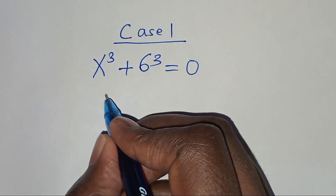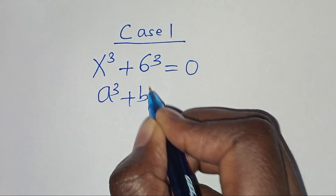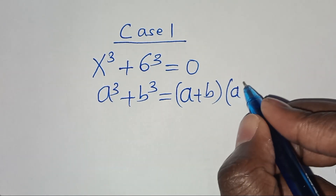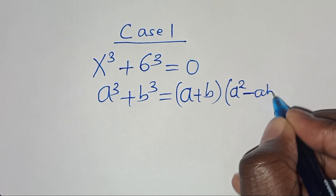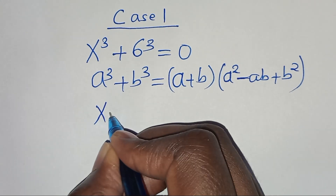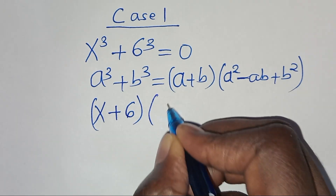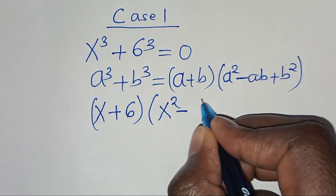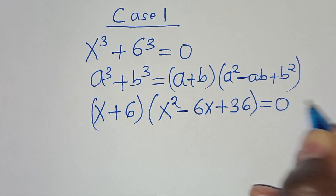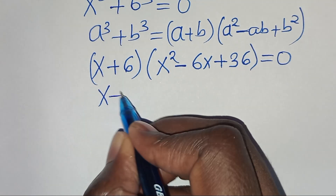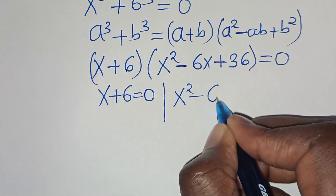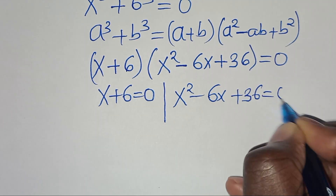We can express the sum of two cubes as (a + b)(a² - ab + b²). Applying this identity, we have (x + 6)(x² - 6x + 36) equals 0. So we have two parts: the first part is x + 6 = 0, and the second part is x² - 6x + 36 = 0.